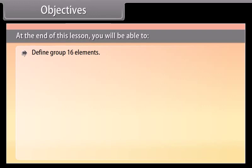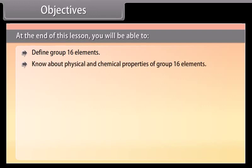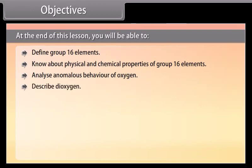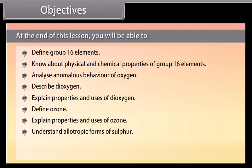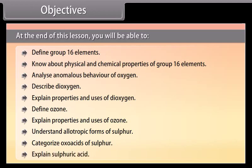Define group 16 elements, know about physical and chemical properties of group 16 elements, analyze anomalous behavior of oxygen, describe dioxygen, explain properties and uses of dioxygen, define ozone, explain properties and uses of ozone, understand allotropic forms of sulfur, categorize oxoacids of sulfur, and explain sulfuric acid.